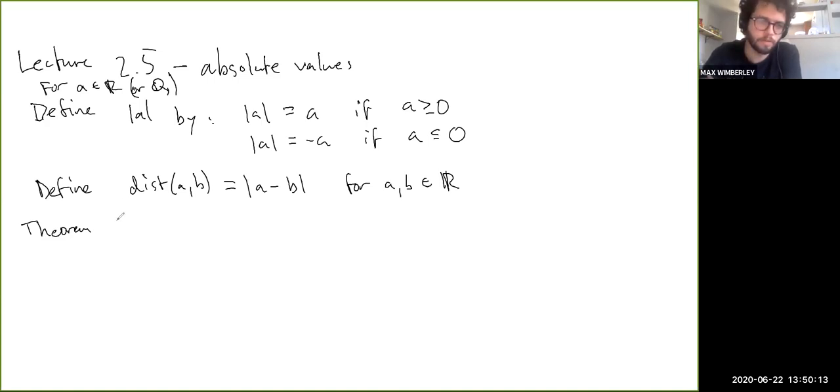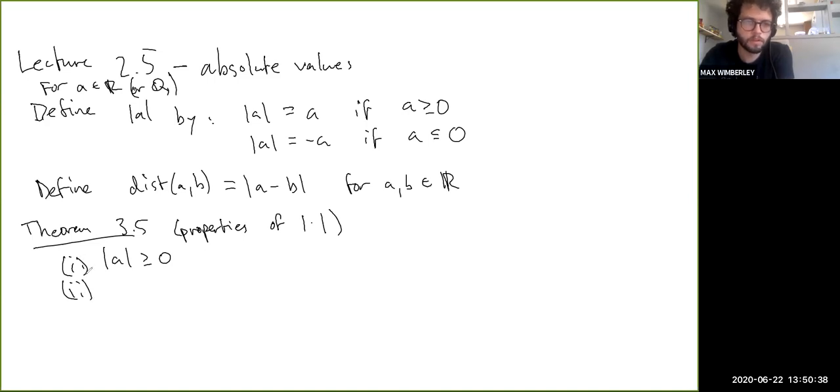Actually, so there's a theorem here that they list. This is 3.5, which is basic properties of absolute value. And it has three parts. So the first one is that the absolute value is always non-negative. The second part is that the absolute value factors through products. And the third one is a special one, very famous: |a + b| ≤ |a| + |b|. This is called the triangle inequality.